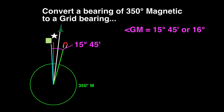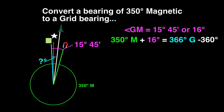Draw the 350 degree magnetic bearing onto the diagram. The answer we are seeking is the angle from grid north to the target. The grid bearing we are seeking is larger than the magnetic bearing we were given, so we add 16 degrees to the 350 degree magnetic value. This gives us a result of 366 degrees. Bearings need to be given in terms of a 0 to 360 degree circle, so subtract 360 from the 366 degrees to get the answer of 6 degrees grid.